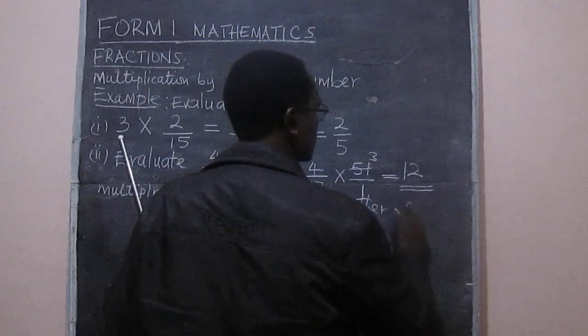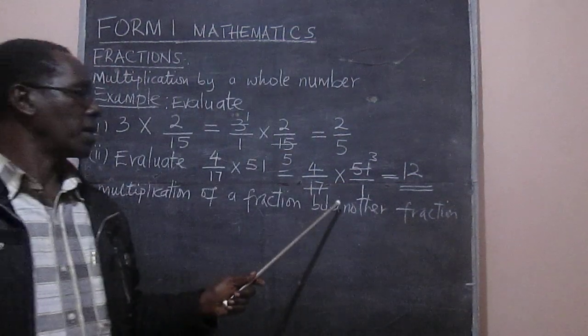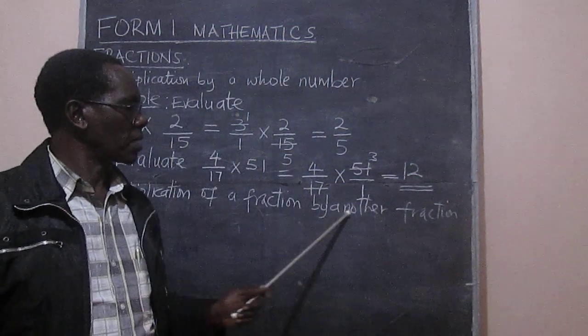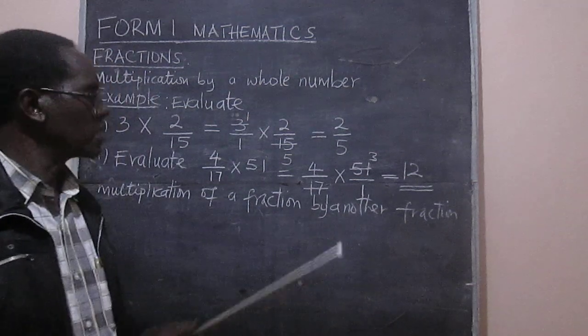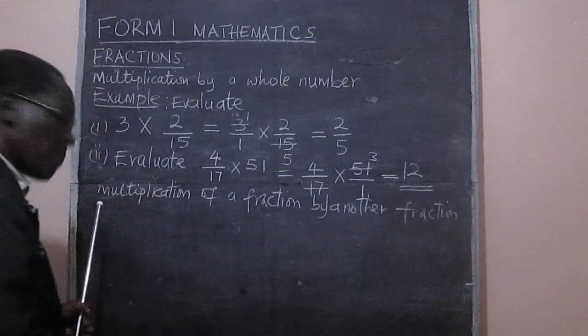We want to multiply a fraction by another fraction. There is a gap here. These are two words, by another fraction.